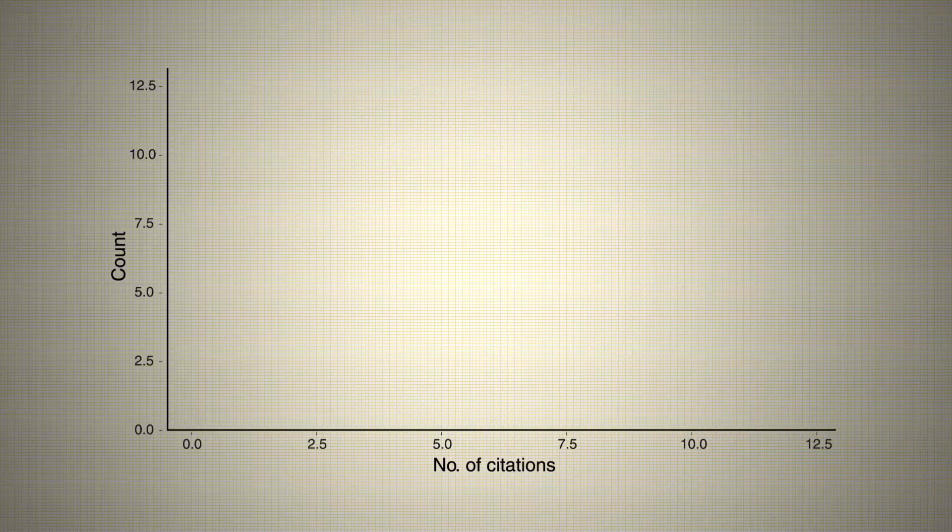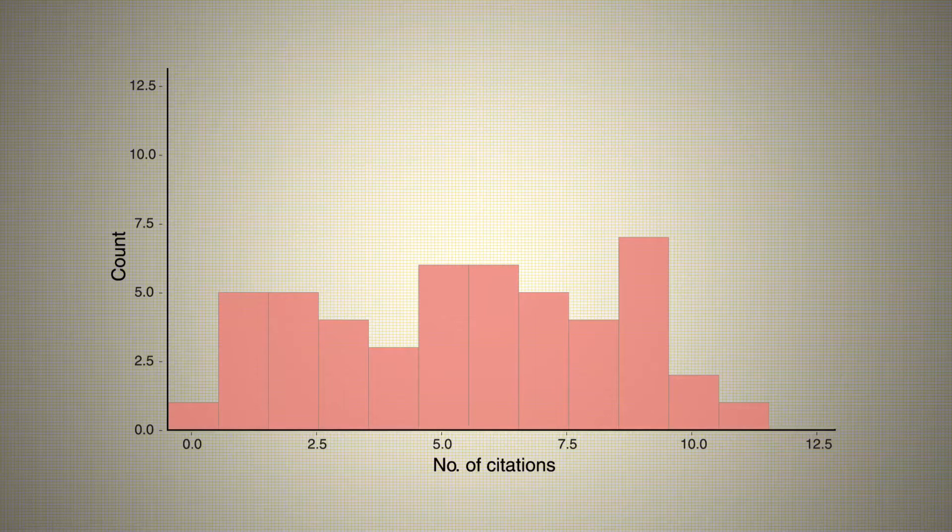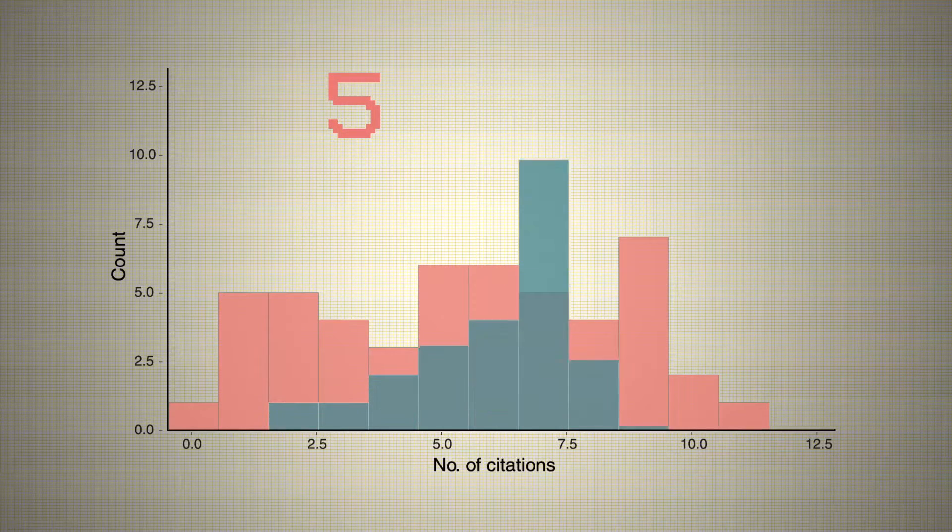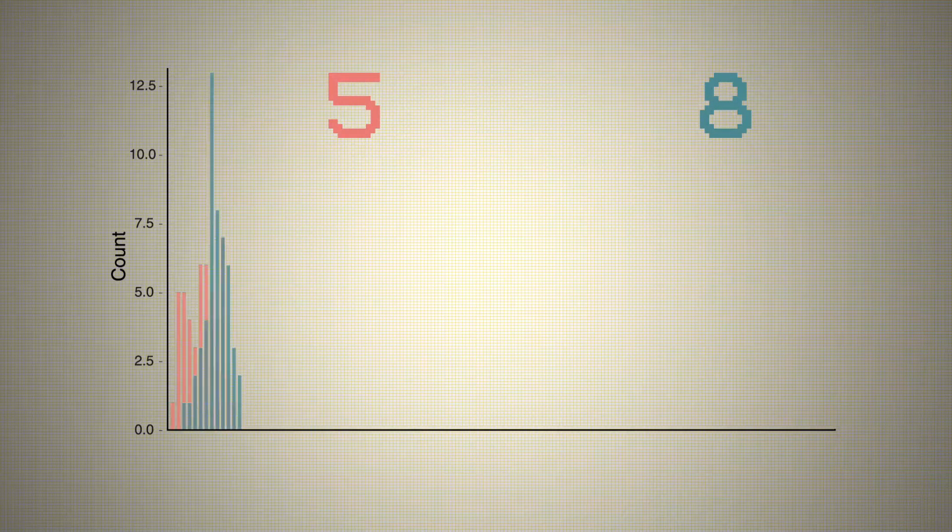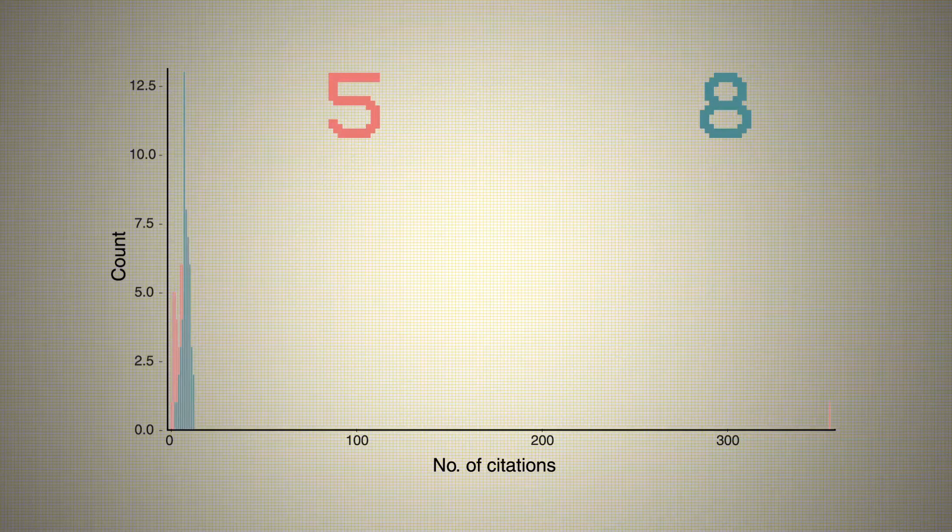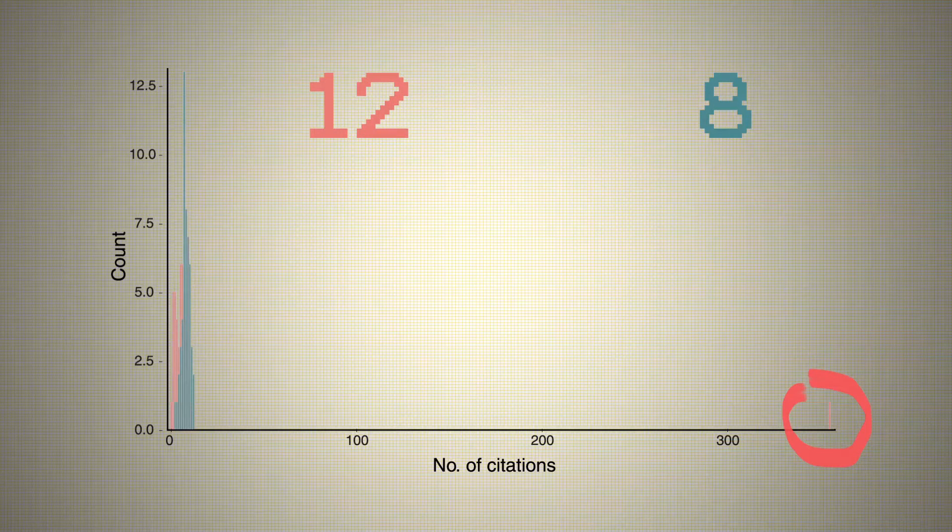The first is that citations have a skewed distribution. If we compare two journals, in Journal Red, most of the articles have less than 10 citations, and the average is 5. Journal Blue has a higher impact, with many getting 10 and an average of 8. But then Red publishes one very high-impact paper. It gets over 350 citations. This one paper bumps up the average to 12.